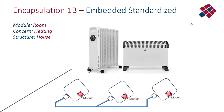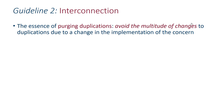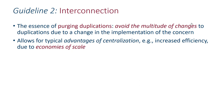The second guideline is interconnection, and the essence of interconnection is purging duplications. Avoid the multitude of changes to duplications due to a change in the implementation of a concern. If we have separate heaters everywhere and we want to change them, we need to change them in every room. So we want to purge duplications and avoid the duplicated multitude of changes. It also allows for typical advantages of centralization: increased efficiency in large installations due to economies of scale, and also easier building in redundancy at the central place.